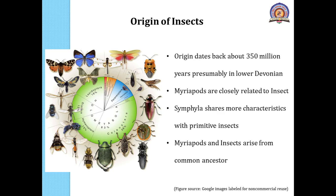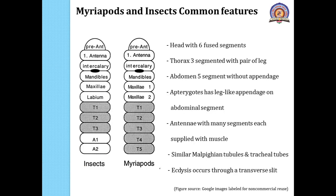It is said that both myriapods and the insects arose from a common stock of myriapod-like ancestors. The evidence for this can be seen in the fact that the first instar of many diplopod myriapods shows many features which are exactly common with the insects. For example, the head is provided with 6 segments.